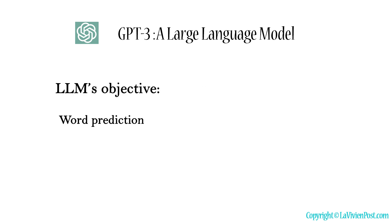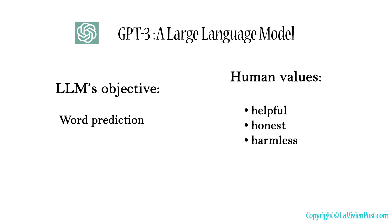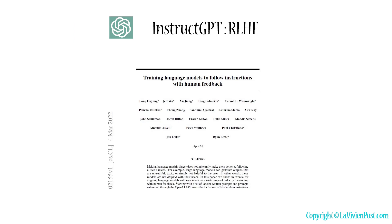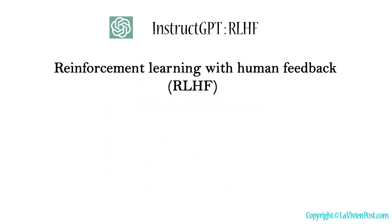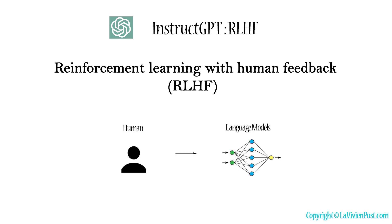The language modeling objective is word prediction, which lacks the consideration of human values or preferences. To avert these unexpected behaviors, human alignment has been proposed to make large language models act in line with human expectations. In early 2022, InstructGPT was introduced to address the problems. OpenAI utilized the technique of reinforcement learning with human feedback to incorporate humans in the training loop with elaborately designed labeling strategies. This technique used human preferences as a reward signal to fine-tune large language models.